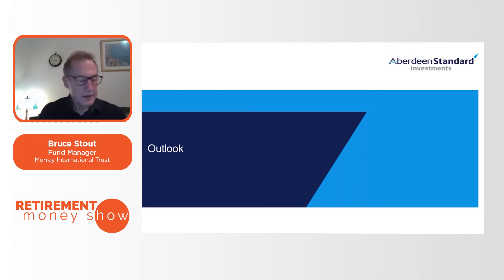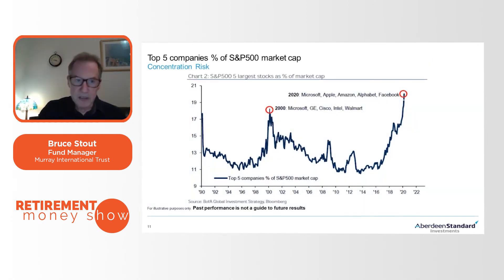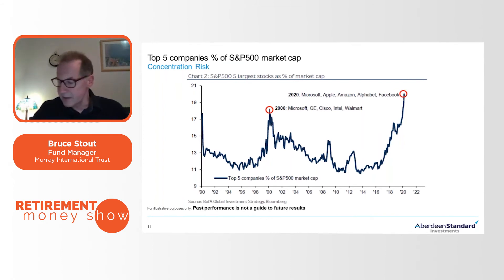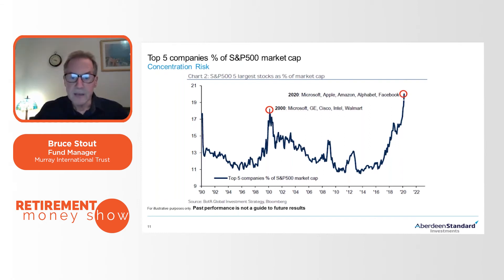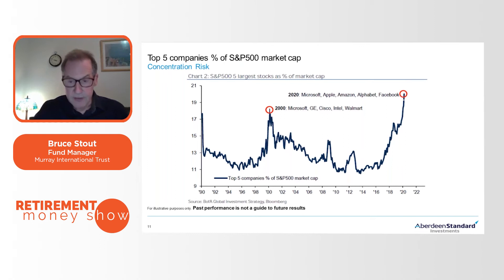In the time I have left, I want to mention the outlook. The concentration risk which has been building for the last couple of years has been really exaggerated this year, with markets moving into fewer and fewer companies, partly to do with index-hugging type funds just buying the same names. When you get this sort of concentration — and this is the S&P 500 in the US — it's extremely dangerous. We saw it before in 2000. Murray International doesn't own any of these five companies that make up 25% of the S&P 500 today, because they don't pay dividends.